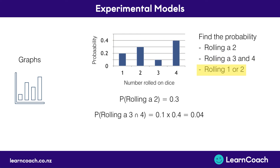Now for the probability of rolling a 1 or 2, we trace back again and add these together, because it's a union. So 0.2 plus 0.3 gives us 0.5.